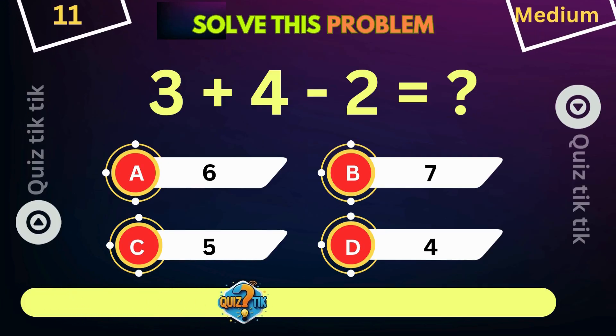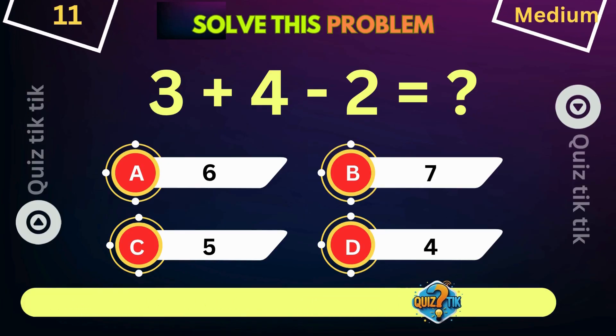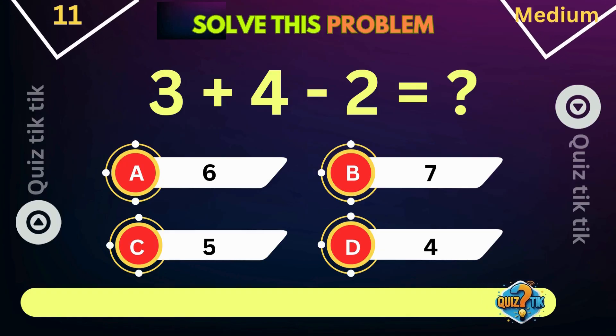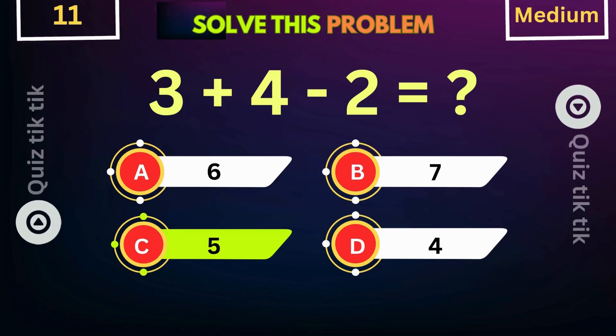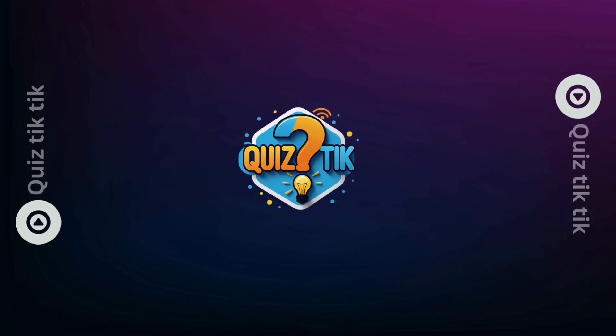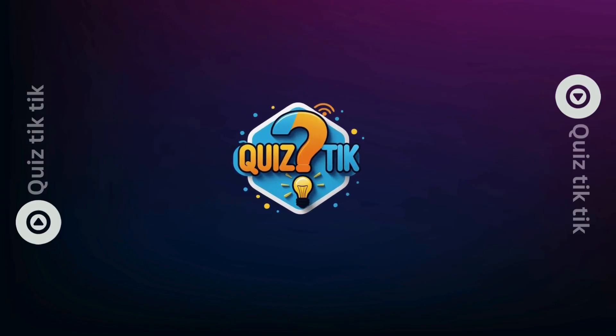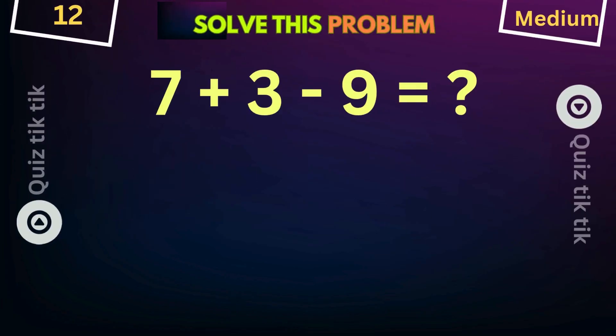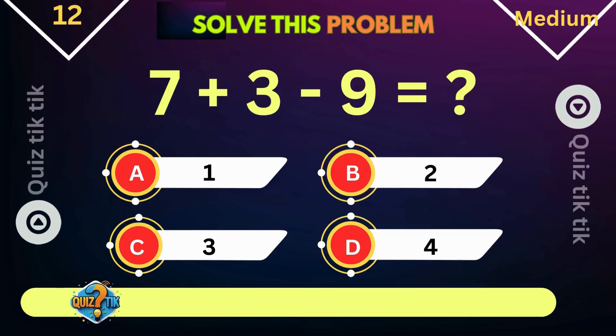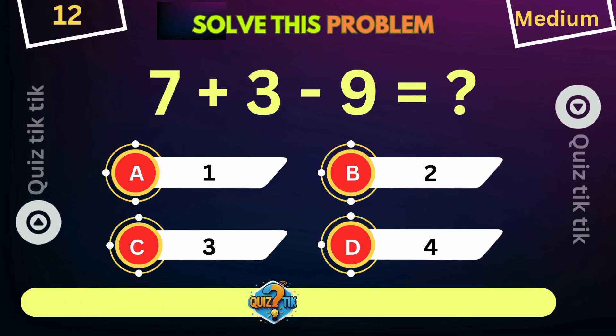3 plus 4 minus 2 is equal to. 7 plus 3 minus 9 is equal to.